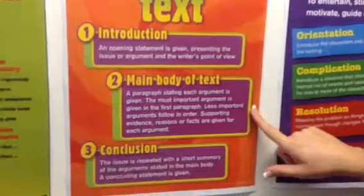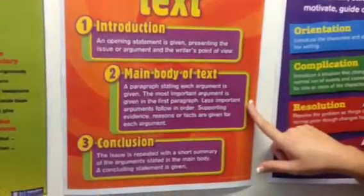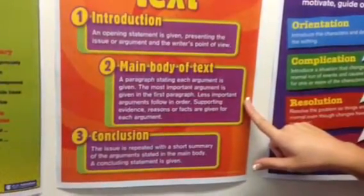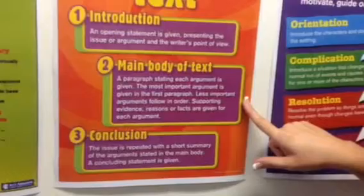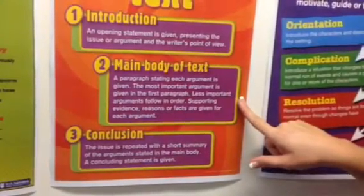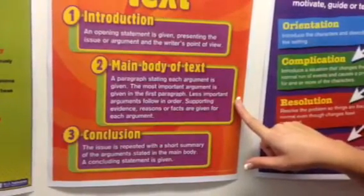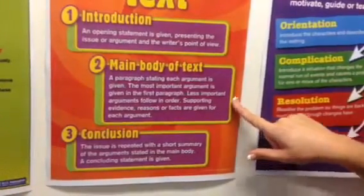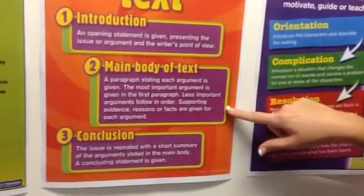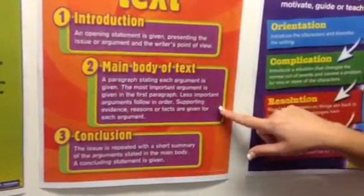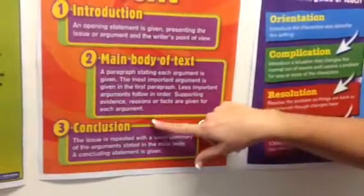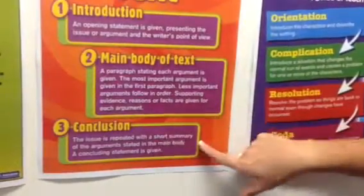In the main body, a paragraph stating each argument is given. The most important argument is given in the first paragraph, with less important arguments following in order. Supporting evidence, reasons, or facts are given for each argument.